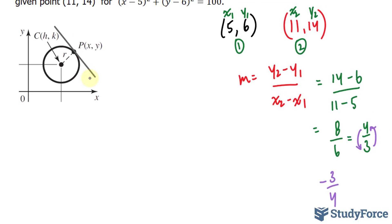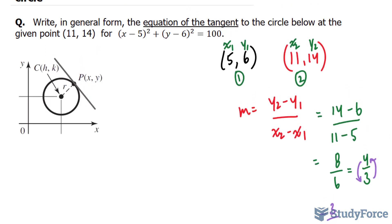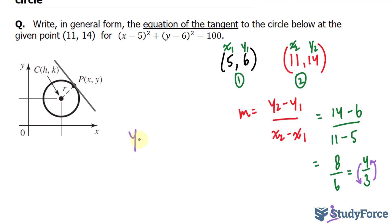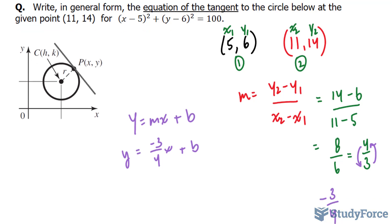Now to construct an equation — and they want it in general form — you need to start off by writing your equation of this line in slope y-intercept form, which looks like this: y is equal to mx plus b. m represents your slope, b represents the y-intercept. We can fill in m with negative 3 over 4, giving us y equals negative 3 over 4x plus b. We also need to find b, and to do that, we substitute the point they gave us, 11 and 14, into x and y.